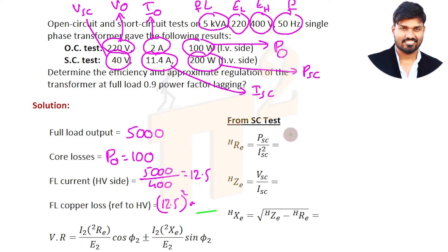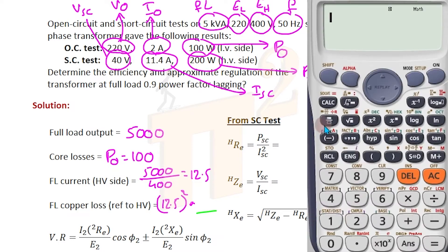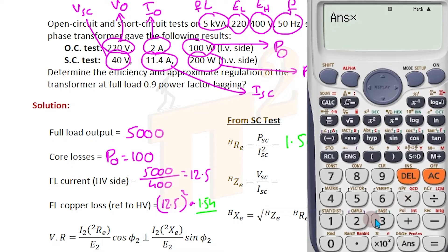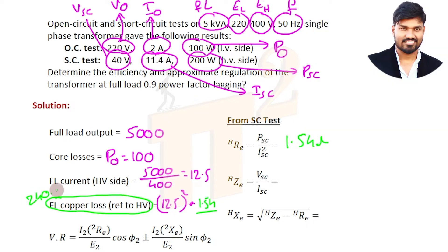What is P_SC? 200 watts. So R_EH equals 200 by 11.4 squared. Your calculator is doing everything. 1.54 Ohm. So keep it here 1.54 Ohm. Now full load copper losses: 12.5 squared into R_2, equals 240 watts. So the answer is 240.46 watts to be more precise.